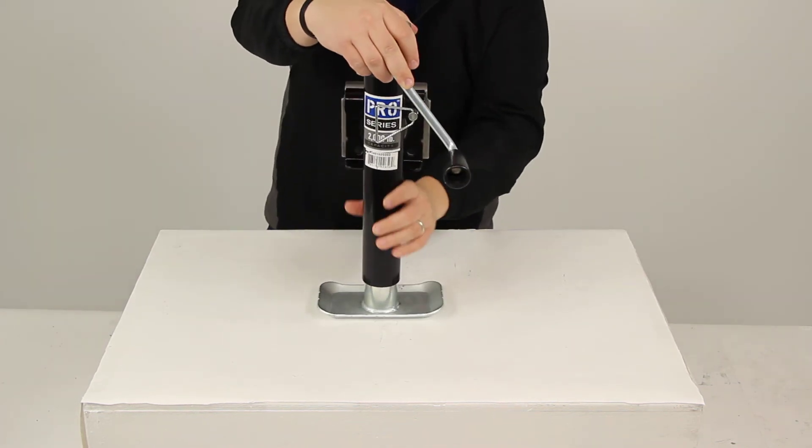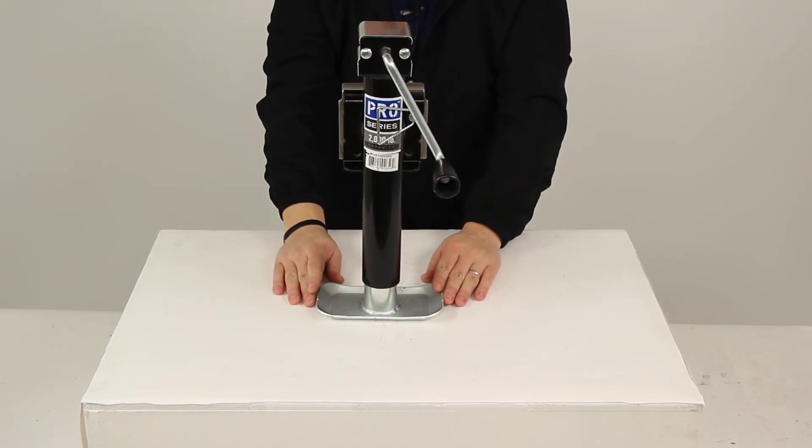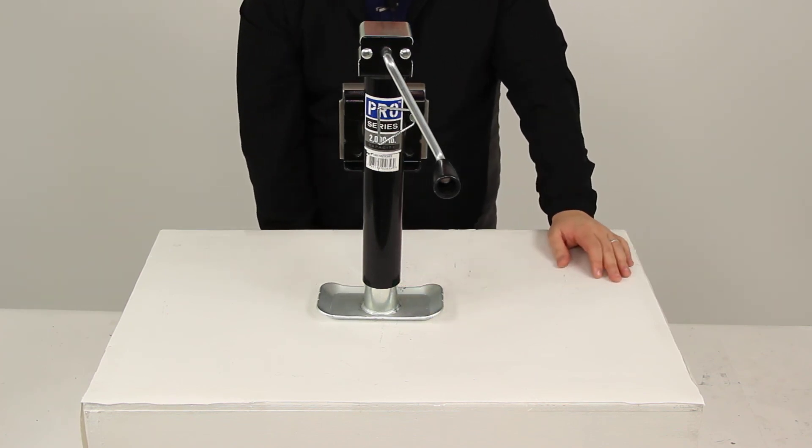That completes today's review of part number PS1401020303, the Pro Series Round Snap Ring Swivel Jack.